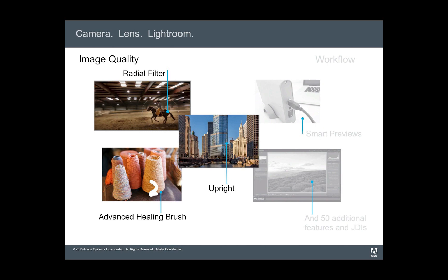Here's a very quick overview of what we're going to talk about today. The new radial filter enables me to isolate content within images and focus the viewer's attention on the element I want. The Advanced Healing Brush moves beyond a circular clone stamp into drawing any custom brush shape. And the great new Upright feature corrects perspective distortion on images.